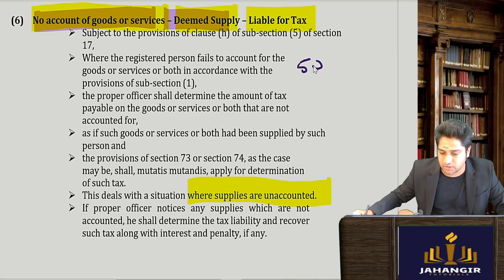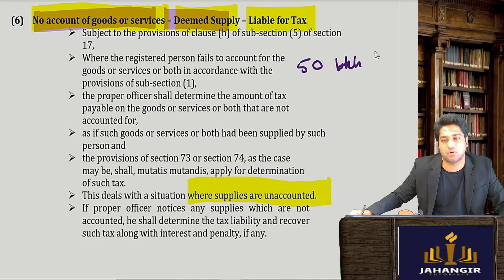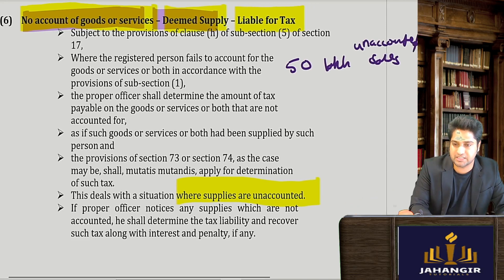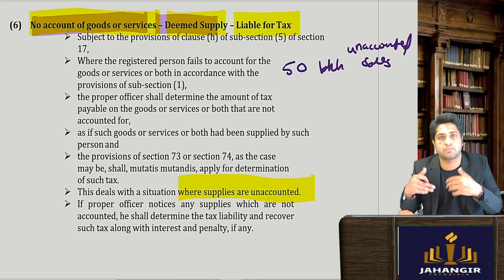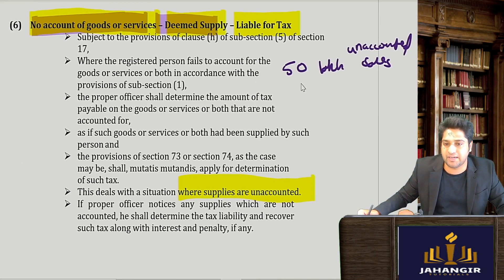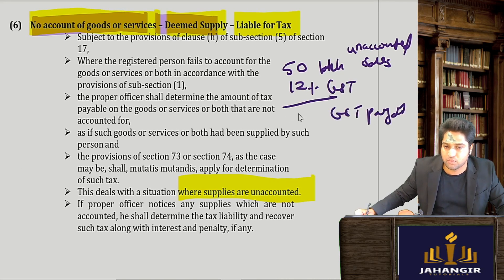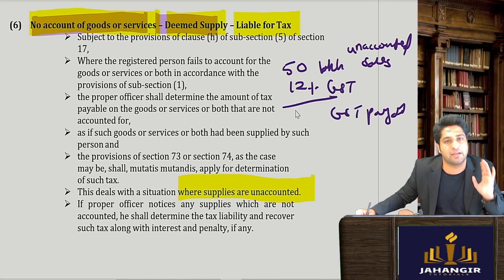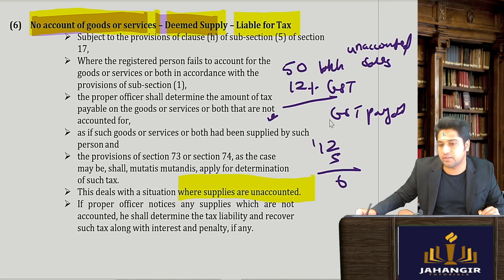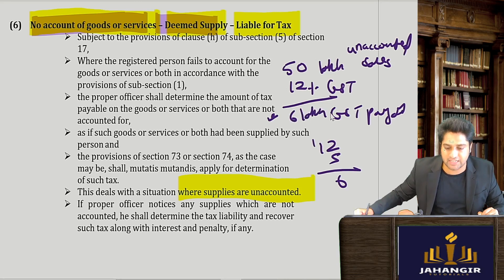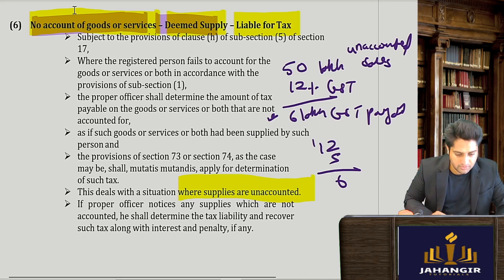For example, if goods worth 50 lakhs were unaccounted — unaccounted sales — with no details available, and 12% GST applies on them, whatever GST is payable you will be liable to pay. So it comes up to 6 lakhs rupees GST payable.